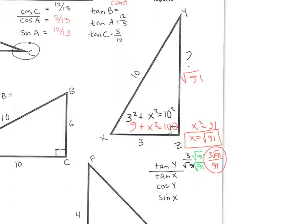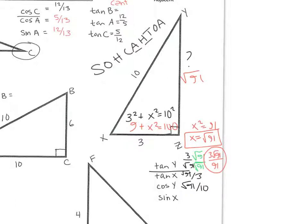Tangent of x: start at x, tangent is opposite over adjacent. The opposite is the square root of 91 and adjacent is 3, so it's the square root of 91 divided by 3. For cosine of y: cosine is adjacent divided by hypotenuse. The adjacent side is the square root of 91 and the hypotenuse is 10, so it's the square root of 91 divided by 10. And sine of x is opposite of x, which is the square root of 91, divided by the hypotenuse 10 — also the square root of 91 over 10.